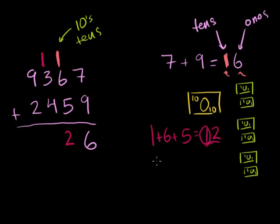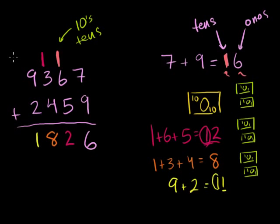So let's do this one right here. 1 plus 3 plus 4 - 1 plus 3 is 4, plus 4 is 8. Nothing to carry, it was a one-digit number. And then finally, I have 9 plus 2. That's equal to 11. So I write the 1 down there, and then if there was anything left here I would carry it, but there's no way to carry it to. So 9,367 plus 2,459 is 11,826.